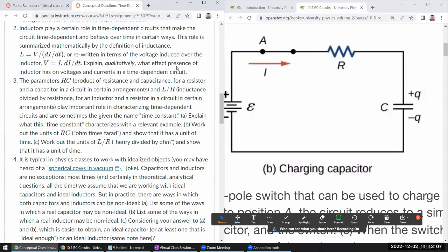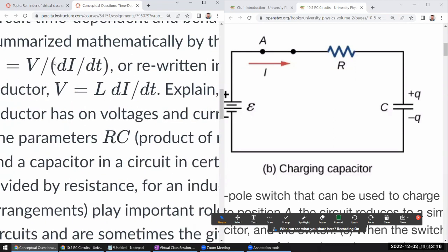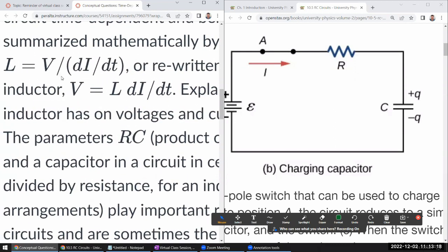Explain qualitatively what effect the presence of inductor has on voltages and currents in a time-dependent circuit. So I think we can just look at this expression and work with them because it relates directly voltage to something that's related to current. So voltage across the inductor will be related to rate of change of current.